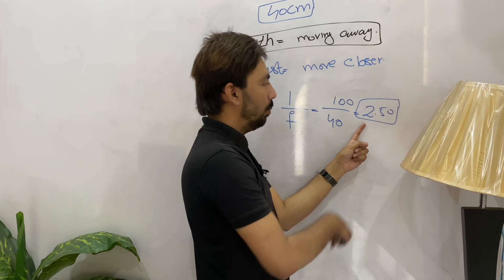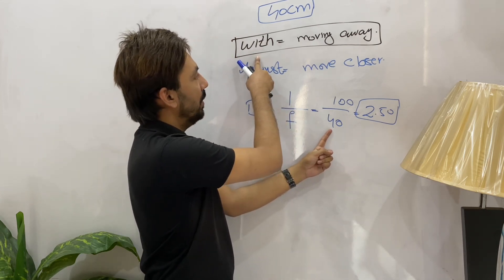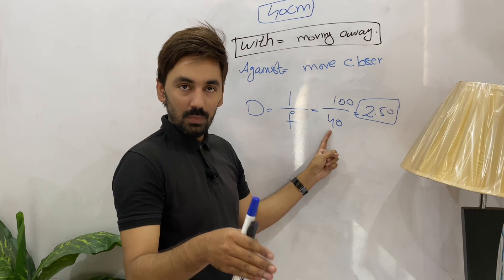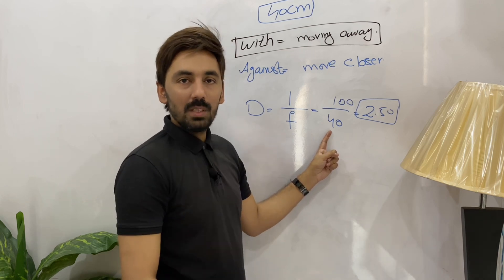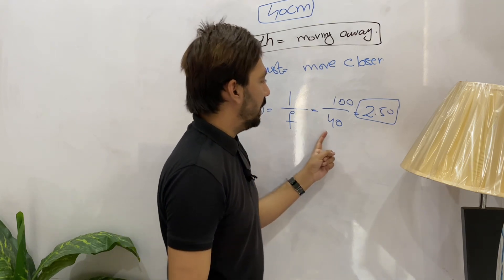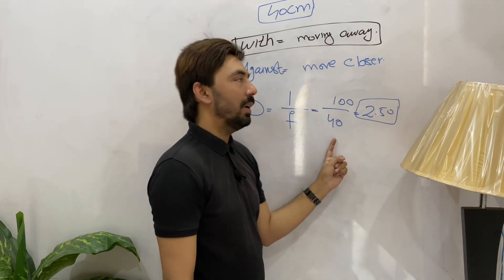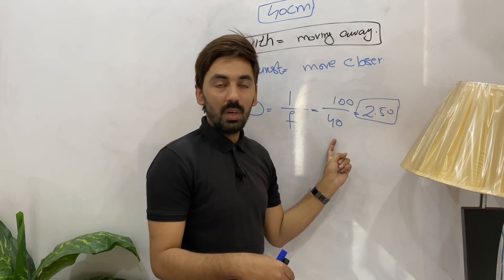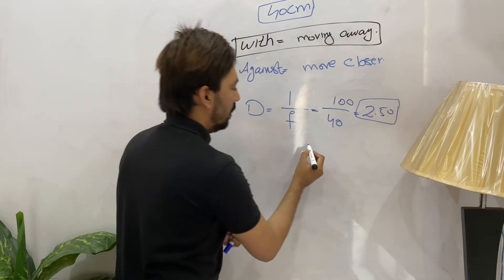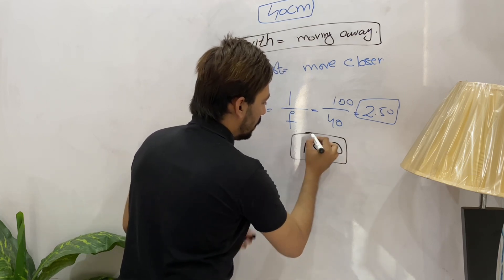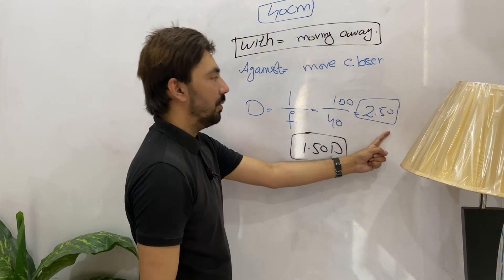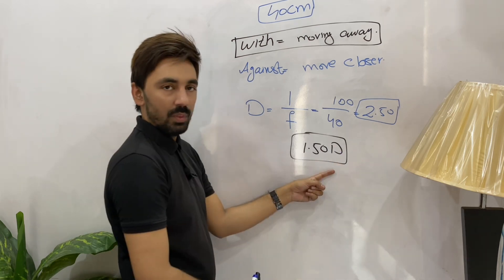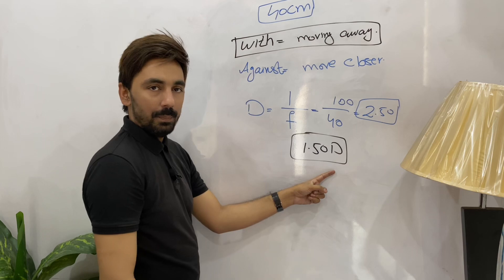At 40 centimeters we have with movement. With movement means that the patient is under-accommodating — there is a deficiency of plus power inside the patient's eye. At 40 centimeters there should be 2.5 diopters of accommodation, but the patient has 1.5 diopters less than 2.5, which is why we see with movement.